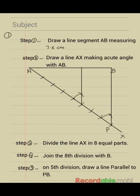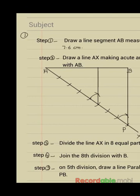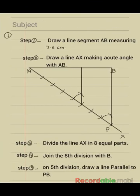Today we are going to learn how to divide a line segment into different segments or how to divide a line segment in different ratios. Here you can see I have taken a line segment AB and the measurement is 7.6 centimeters. This is step one.